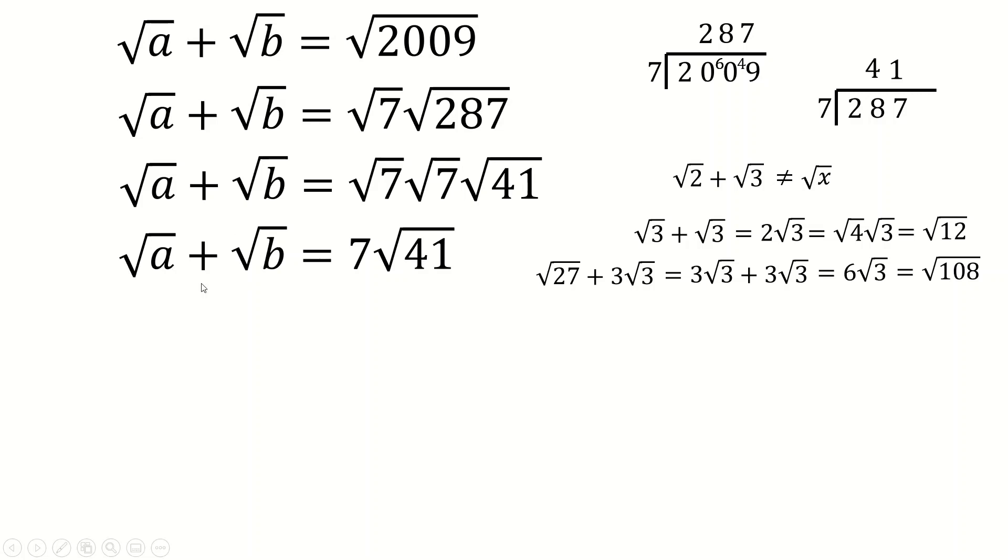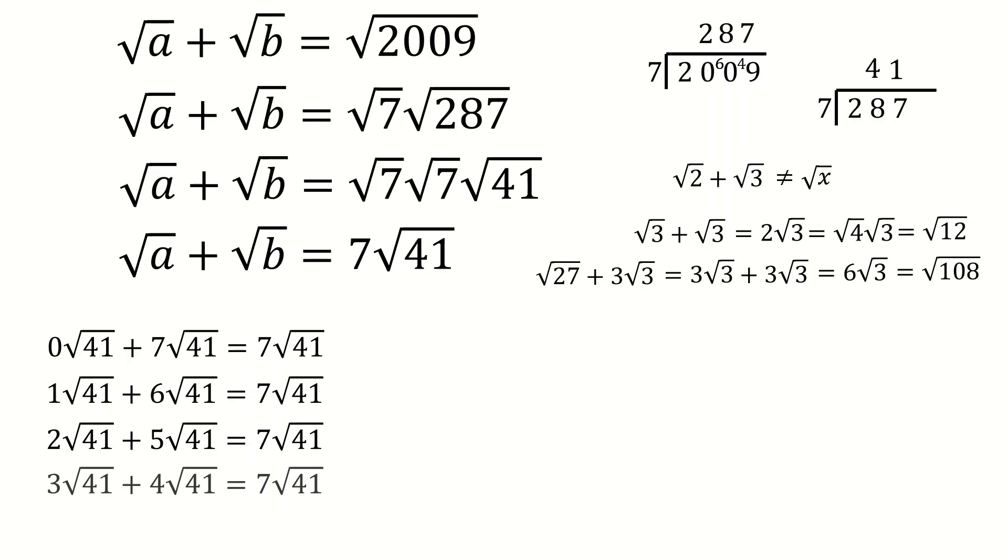So to make this add to this to make this. These have to be root 41s. And so the next few lines are going to seem really obvious having said all of that maybe. Or having not said all of that. But the only way to add two things together to make 7 root 41 is to do 0 root 41 plus 7 root 41. Or 1 root 41 plus 6 root 41. Or 2 plus 5. Or 3 plus 4. Or 4 plus 3. And so on.